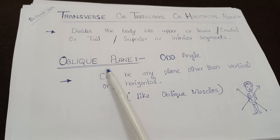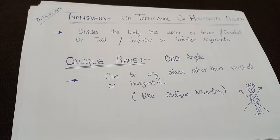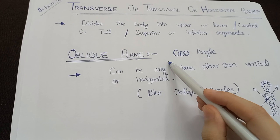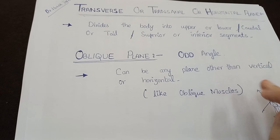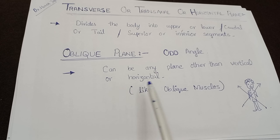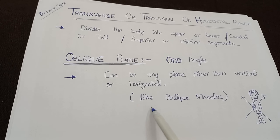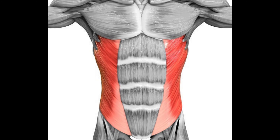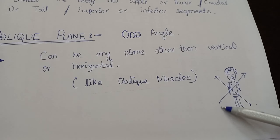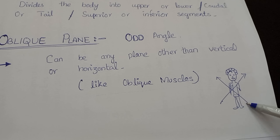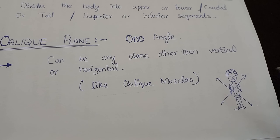Now the last one — the oblique plane — is not much important. It is also known as the odd angle, and it can be any plane other than vertical or horizontal, like the oblique muscles. It could be any plane other than horizontal or vertical.